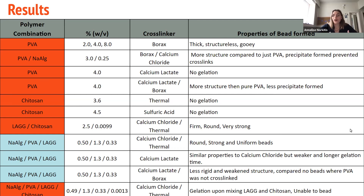Our most successful gel beads were sodium alginate, PVA, and low acyl gellan gum. These created round, strong, and very uniform beads, and in cold calcium chloride or cold calcium lactate they can gel completely. In calcium chloride, we have a gel time of 14 minutes. In calcium lactate it's a bit longer, but the final product is the same.